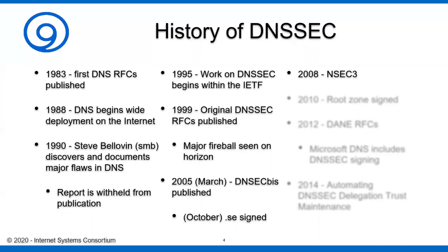One of the original problems with DNSSEC Bis was something called NSEC, which we'll talk about in detail later in the series. NSEC had some issues with allowing the enumeration of labels within a domain name. If you knew the name of a domain, you could basically go through and figure out every single label that existed within it. That wasn't appropriate for some organizations. So in 2008, a new RFC was published creating a new resource record called the NSEC3 record — a hashed proof of non-existence.